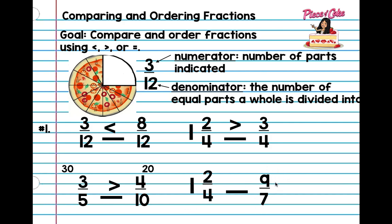Instead of working with the improper fraction directly, we're going to use a shortcut. You're going to go four times one, which is four, and then add the numerator: four plus two is six. So your fraction is going to be six-fourths. You see how we did that — we multiplied.